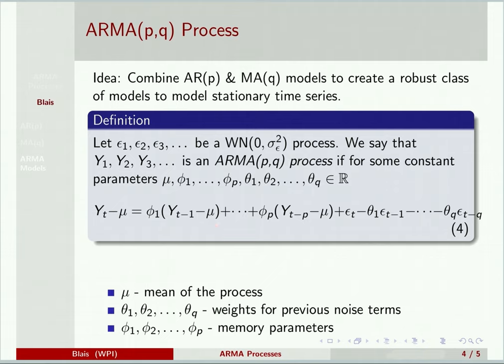And we see Y_t differs from its mean according to pieces of itself from prior days. So this is our AR(p) part. And then here we have our MA(q) part. So we are now allowing Y_t to remember previous values, portions of previous values of itself, as well as the previous noise terms, and then the new noise term.